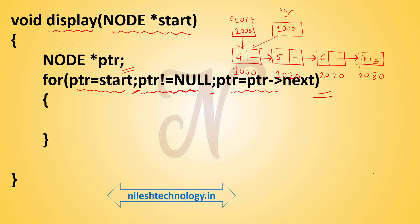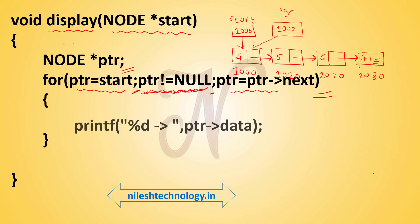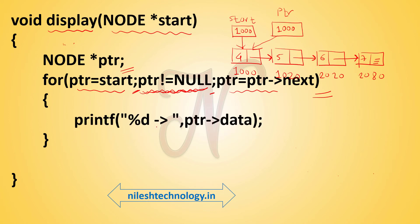Next, check: ptr is not equal to null — true, because it stores the address of a node. Condition is true, so go to the block. In the block: printf percent d, then ptr arrow data. ptr is 1000, so this is the ptr node, and ptr arrow data is 4 — so 4 is printed, followed by a dash and greater-than sign (arrow). Then the last expression is evaluated: ptr equals ptr arrow next.